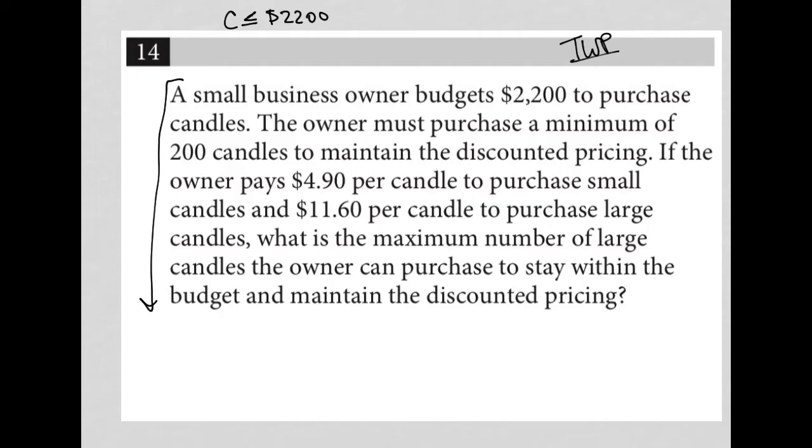The next sentence says, the owner must purchase a minimum of 200 candles to maintain the discounted pricing. Okay, so C has to be greater than or equal to 200 in terms of the number of candles that are purchased.